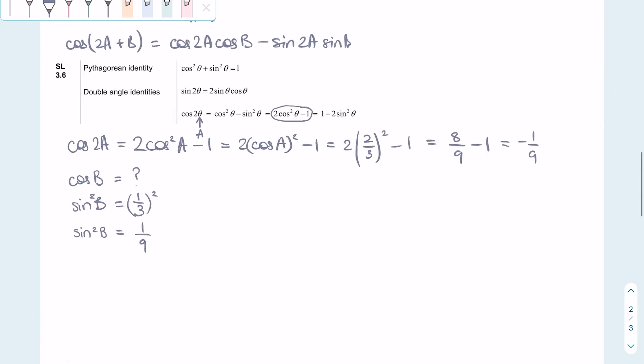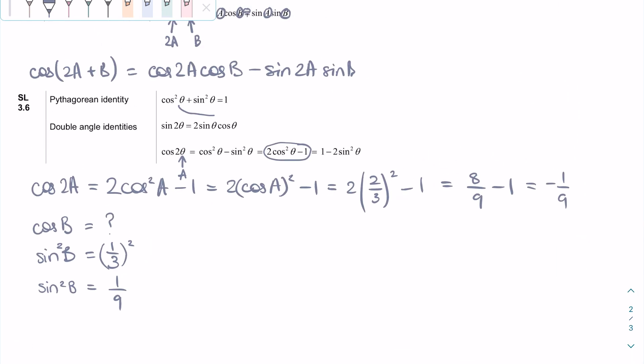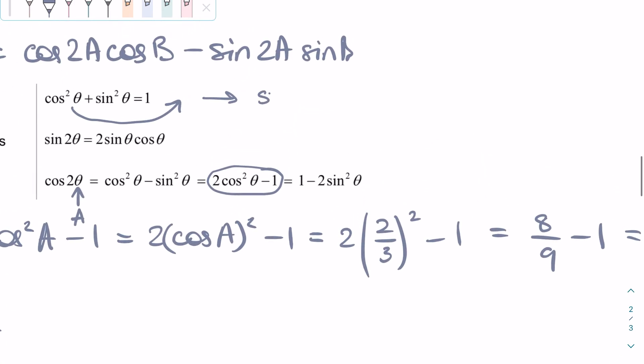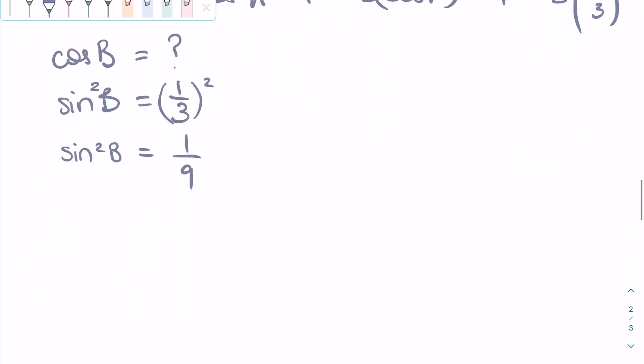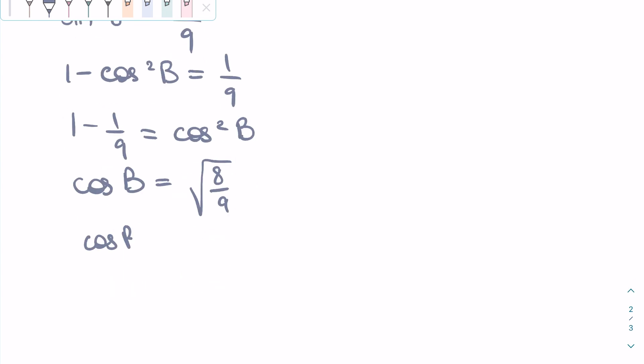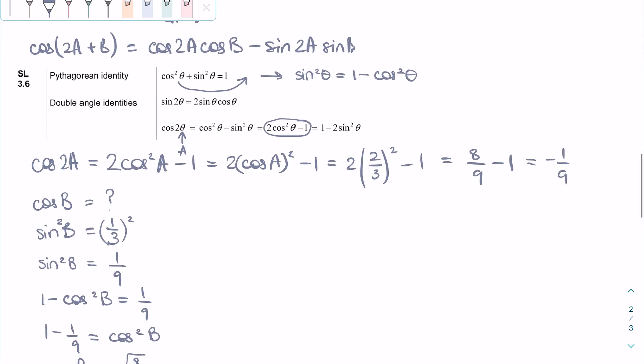We can then use the formula booklet Pythagorean identity that cosine squared plus sine squared is 1. And we can rearrange this equation to get sine squared of something is equal to 1 minus cosine squared something. That means we can rewrite sine squared B as 1 minus cosine squared B. Once we rearrange the equation a little bit, we get cosine B is equal to 2 square root of 2 over 3.